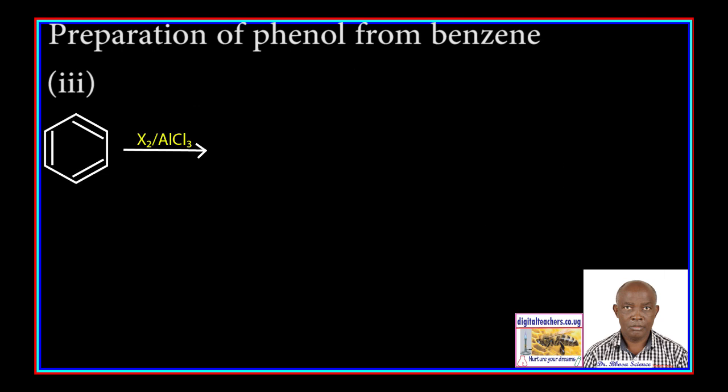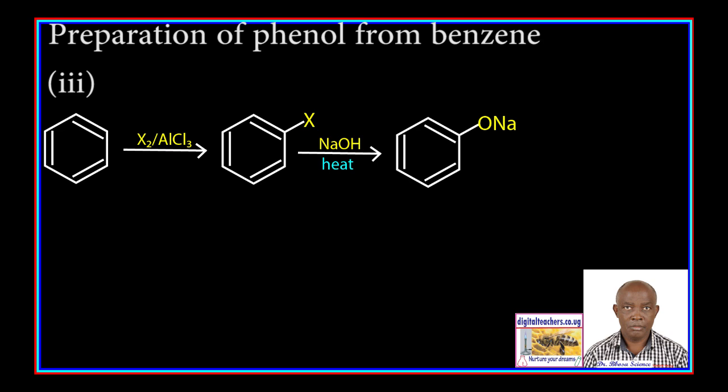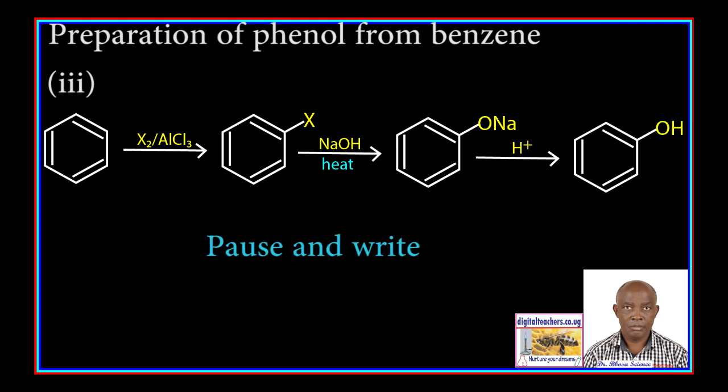Method 3: Benzene is reacted with a halogen in the presence of a halogen carrier to form benzene halide. Benzene halide is fused with sodium hydroxide to form sodium phenoxide, which is hydrolyzed to form phenol.